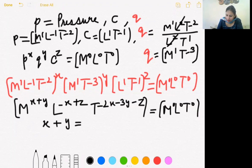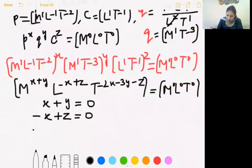Equating the powers now we get three equations. X plus Y equal to 0. Minus X plus Z equal to 0. And minus 2X minus 3Y minus Z equal to 0. Now these are three equations that have come. You should solve them. You can see that there are infinite solutions because 0 equal to 0 will come.